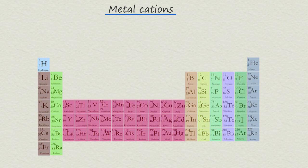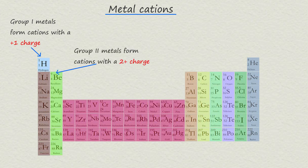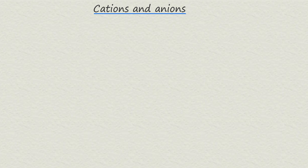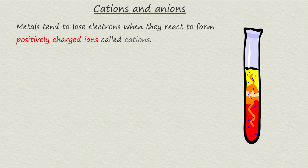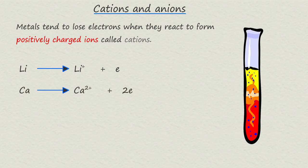We can summarize this using the periodic table: group one metals form cations with a plus one charge, group two metals form cations with a two plus charge, and group three metals form cations with a three plus charge. For example, a group one metal such as lithium loses one electron to form a lithium cation, calcium loses two electrons to form a two plus cation, and aluminium loses three electrons to form an aluminium cation with a three plus charge.